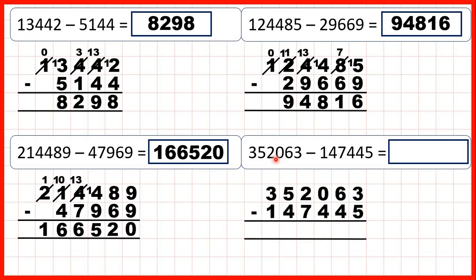For our last question we have 352,063 minus 147,445. 5 is larger than 3, so go to the left, one less, one in front — 13 minus 5 is 8. Then 5 minus 4 is 1. 4 is larger than 0, so we can't do 0 minus 4 using the column method.